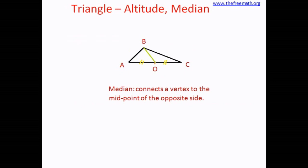B is not the only vertex, so if you draw a median from vertex A it connects to the midpoint of side BC, and if you draw a median from vertex C it connects to the midpoint of side AB. You can see that all three medians meet at a single point. For any kind of triangle, all the medians always meet at a single point, and this point is called the centroid of a triangle.